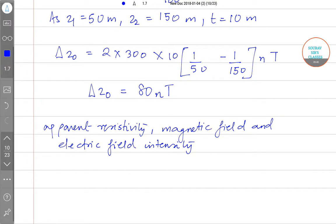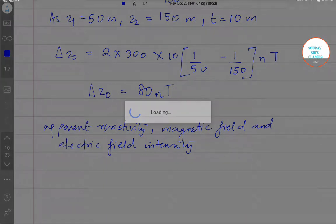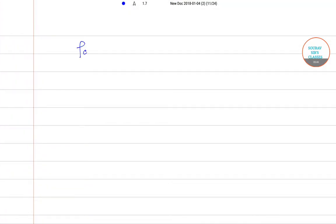So let me insert one more page. Rho A equals 0.2 by F bracket open E by B whole square. Here it is given that rho A equals 50, F equals 0.1 hertz, and E equals 12 mV per kilometer.